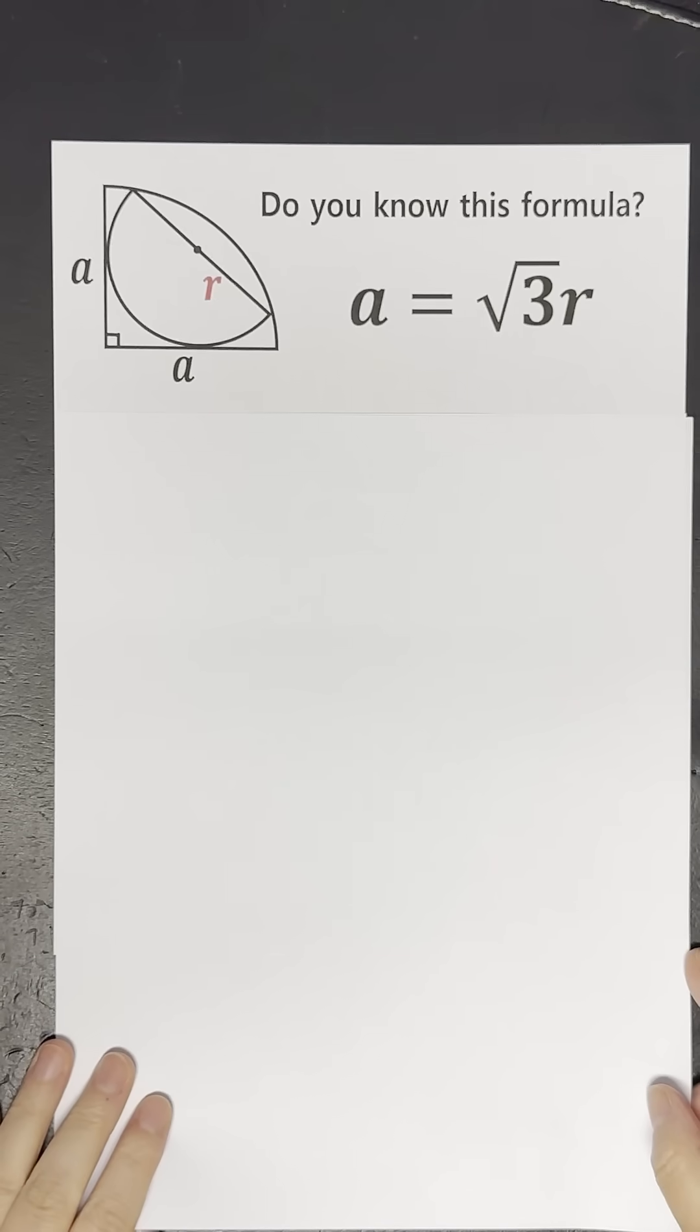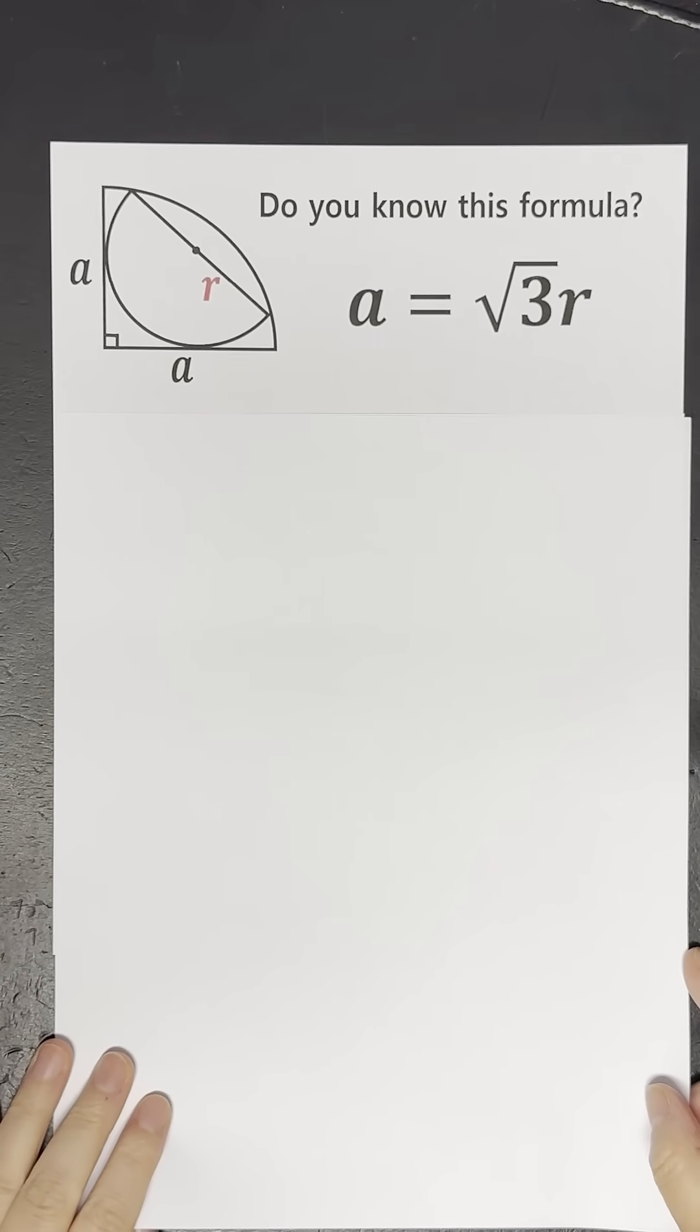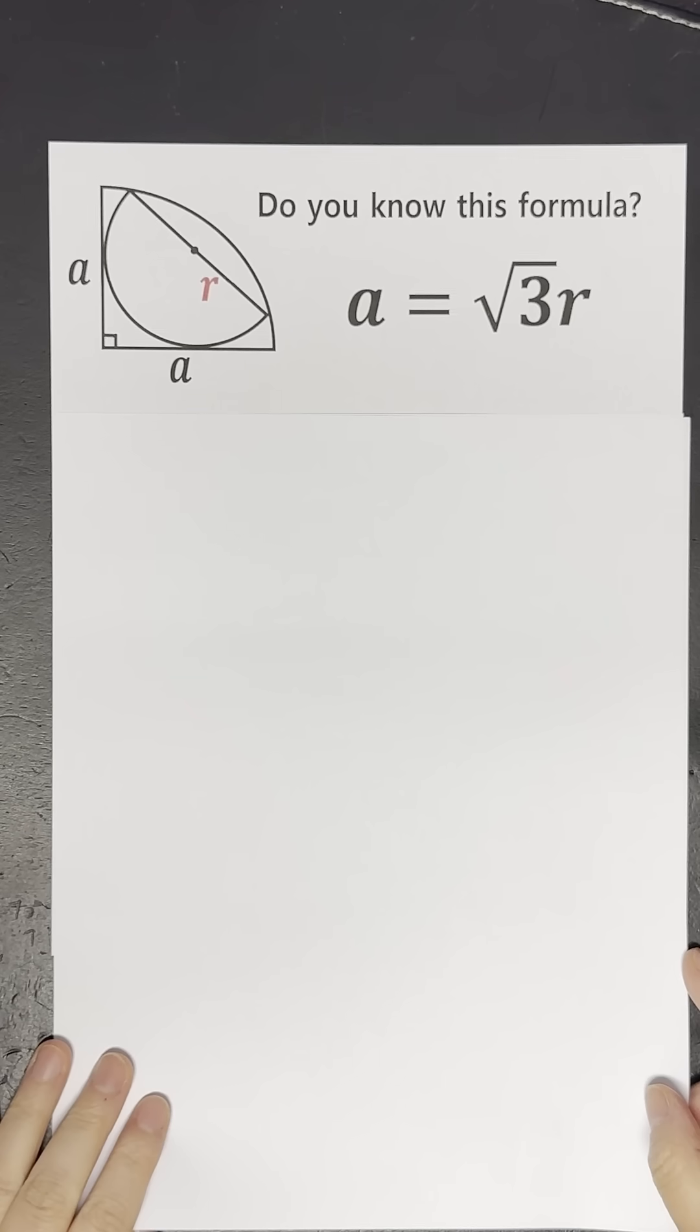When you know the radius of a quarter circle, you can also find the radius of its inscribed semicircle. Let's figure out how this formula came to be.